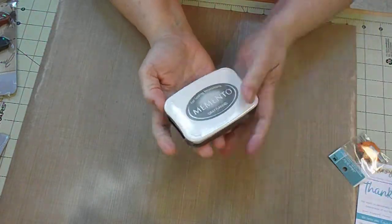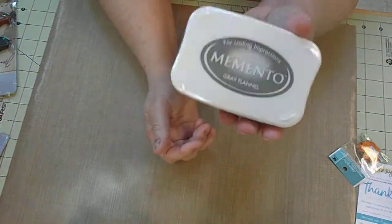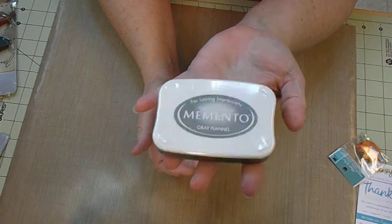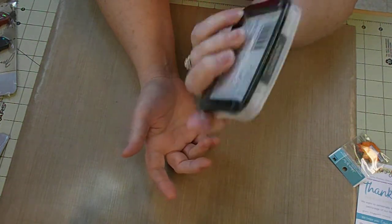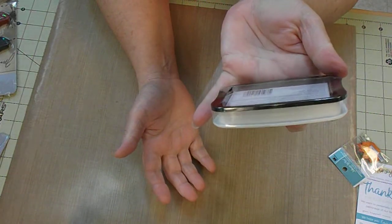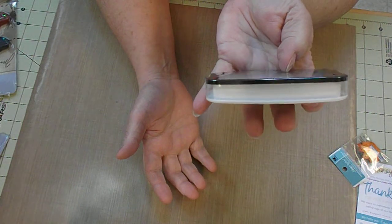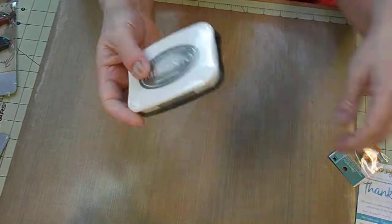And then I also ordered from Honey Bee Stamps this Memento. I didn't have a gray ink pad. And I thought gray that would be cute. Gray flannel.